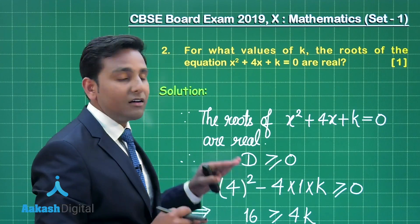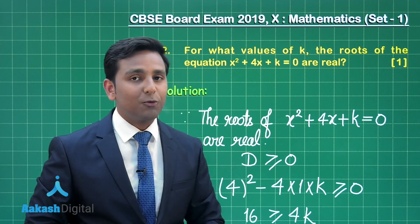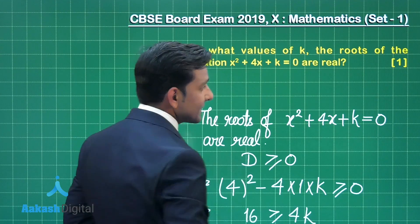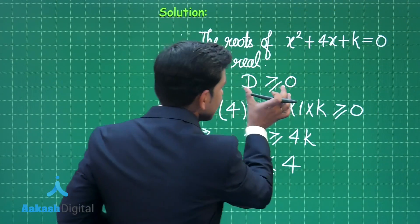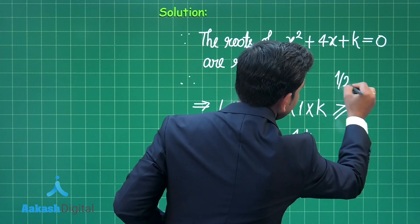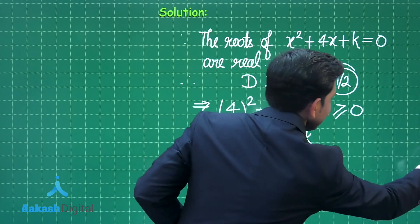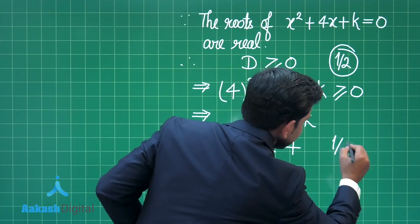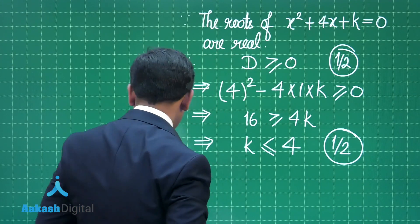This is the complete solution of this one-mark question. The step applying the discriminant condition earns half a mark, and the final answer k ≤ 4 earns the remaining half mark.